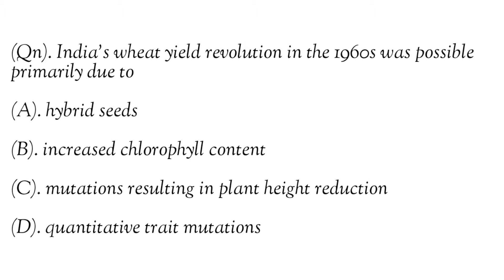India's wheat yield revolution in the 1960s was possible primarily due to: Option A - Hybrid seeds, Option B - Increased chlorophyll content, Option C - Mutations resulting in plant height reduction, Option D - Quantitative trait mutations. The green revolution began in the 1960s, though it's noted that it began in 1953.